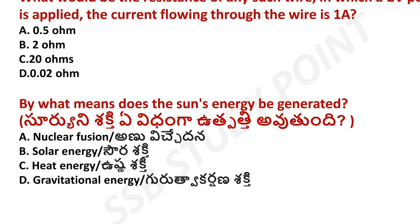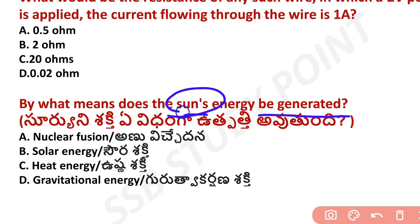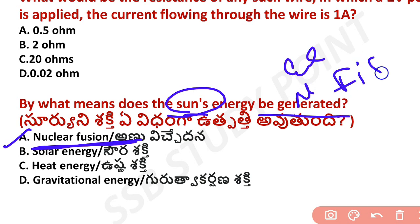Next question: by what means is the sun's energy generated? The sun produces energy through nuclear fusion, not nuclear fission. Nuclear reactors use nuclear fission, but the sun uses nuclear fusion.